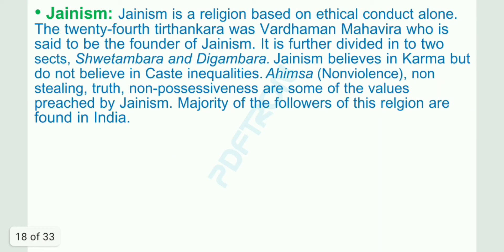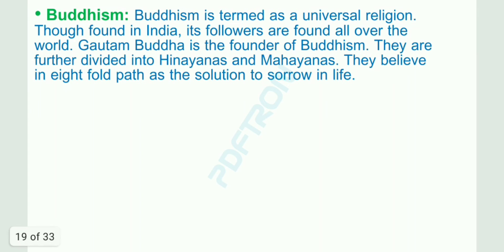Jainism is a religion based on ethical conduct alone. The 24th Tirthankara was Vardhaman Mahavira, who is said to be the founder of Jainism. It is further divided into two sects: Shwetambara and Digambara. Jainism believes in karma but does not believe in caste inequalities. Ahimsa (non-violence), non-stealing, truth and non-possessiveness are some of the values preached by Jainism. Buddhism is termed a universal religion. Though founded in India, its followers are found all over the world. Gautam Buddha is the founder of Buddhism. They are divided into Hinayana and Mahayana, and believe in the Eightfold Path as the solution to sorrow in life.